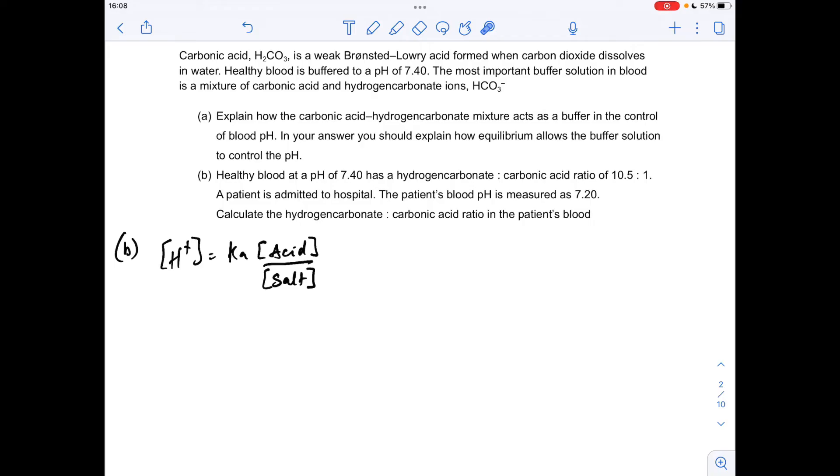Moving on to the calculation now. The first thing we need to establish is the expression to calculate the H+ concentration of a buffer. I've got a silly way to remember it - I call it the 'cassadova salt' expression: Ka of the weak acid times the acid concentration divided by the salt concentration. From the information given, we can calculate the H+ concentration from the pH, feed in the salt to acid concentration, and from that calculate the Ka for healthy blood.